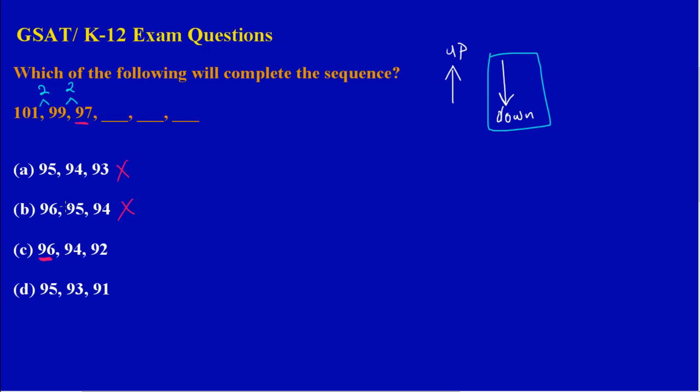Obviously, Part D would be our answer. When you look at Part D carefully, where we left off at the top is 97, and then we would pick up at 95, then 93, and then 91. So that would be our answer.